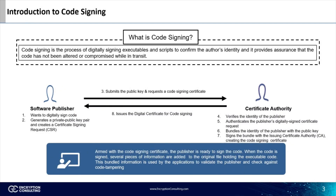We are going to begin with a short introduction to code signing. What is code signing? Code signing is the process of digitally signing executables and scripts to confirm the author's identity and provide assurance the code has not been altered or compromised in any way while in transit.